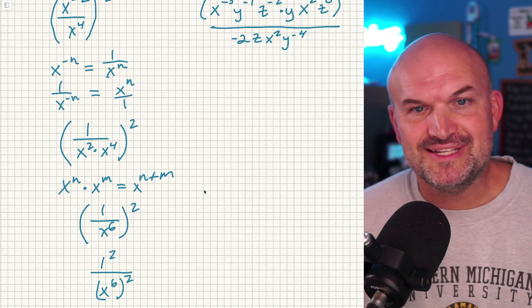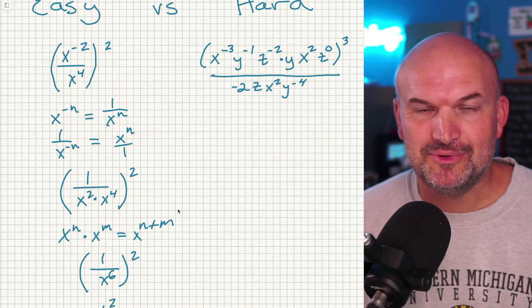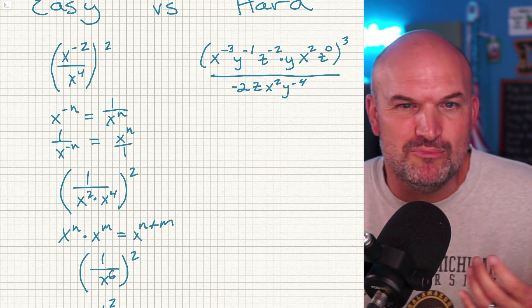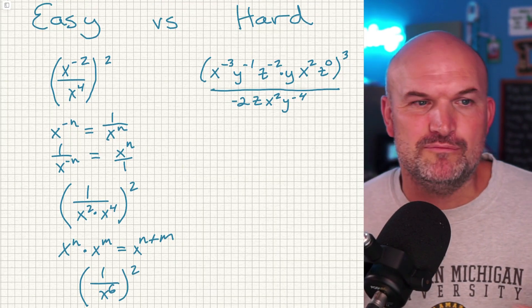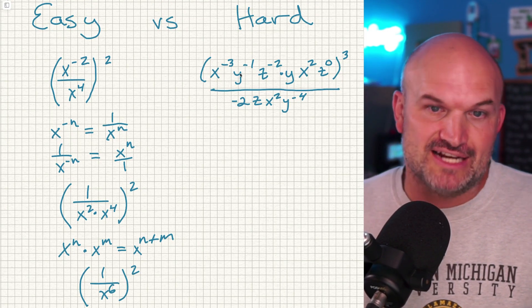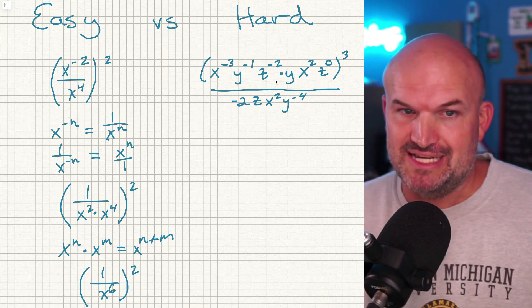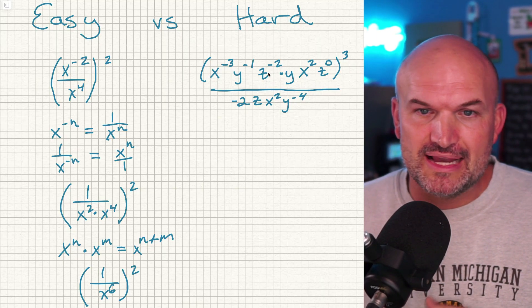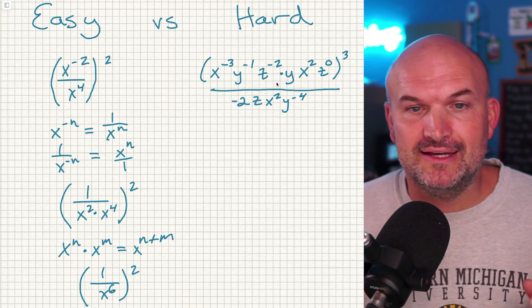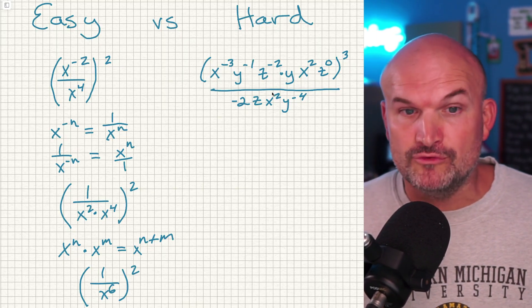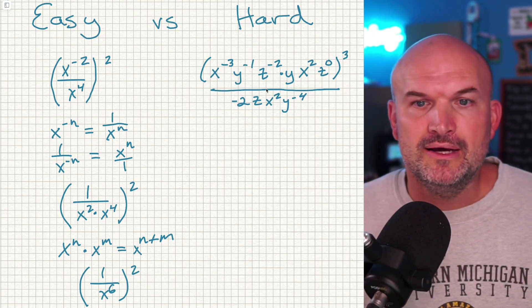Now let's take a look at the hard example. It's not really harder — it's just because there are more variables. We have x, y, and z, and we're going to apply these properties over and over again.